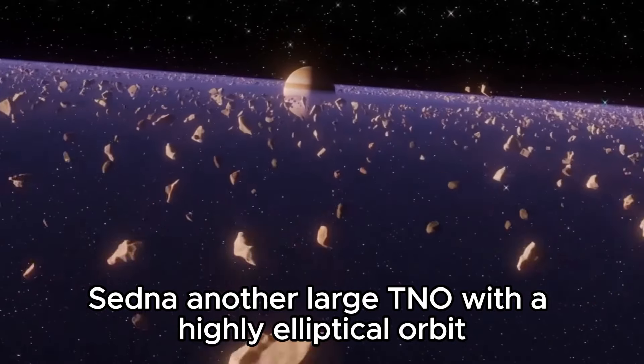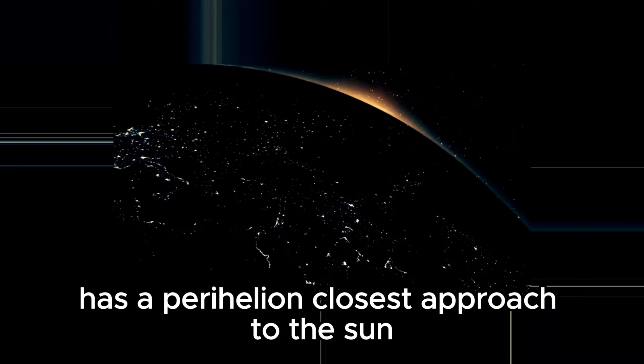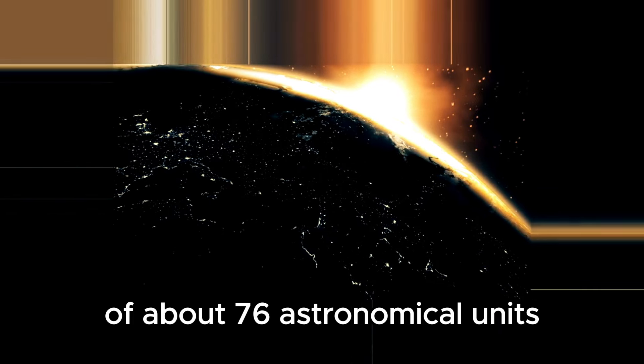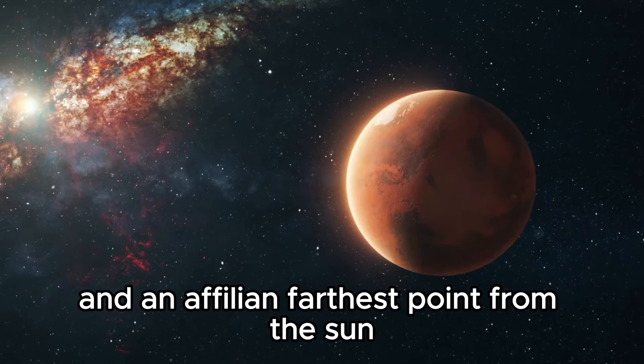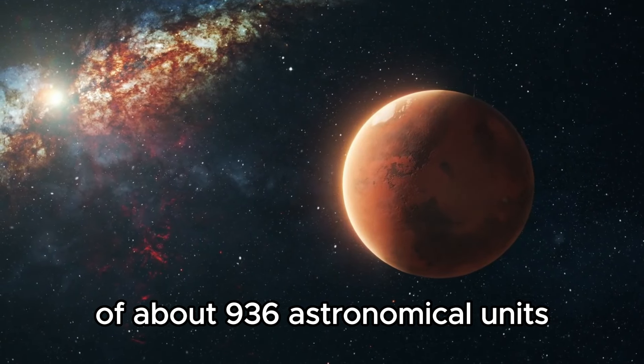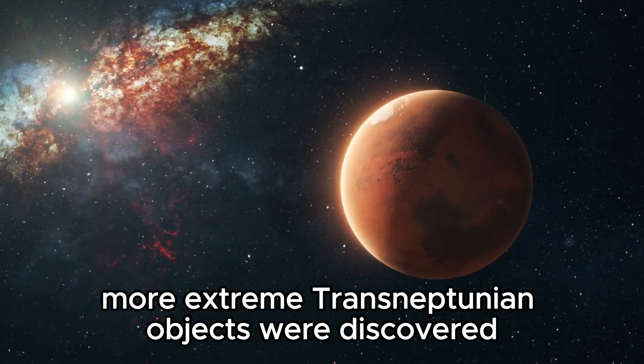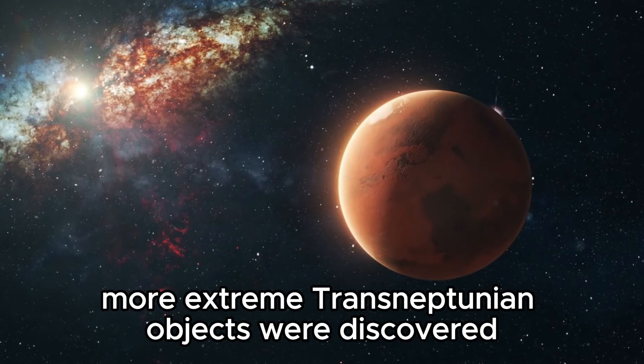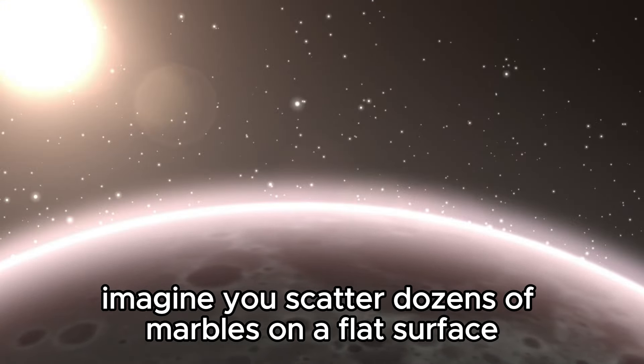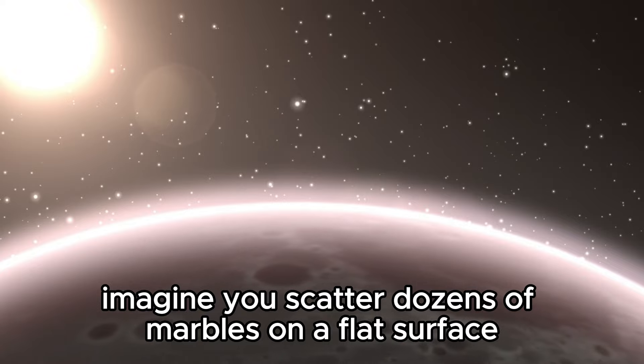The discovery of Sedna in 2003 added to this intrigue. Sedna, another large TNO with a highly elliptical orbit, has a perihelion, closest approach to the sun, of about 76 AU and an aphelion, farthest point from the sun, of about 936 AU. In the next few years, more extreme Trans-Neptunian objects were discovered. There's something unusual about the orbits of TNOs.